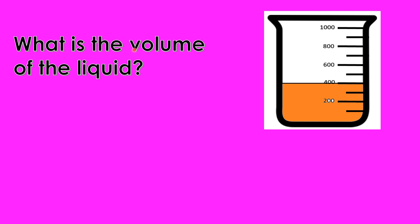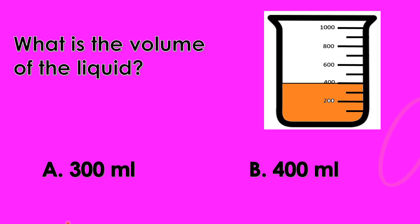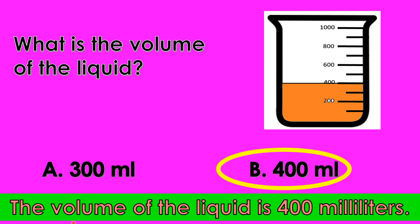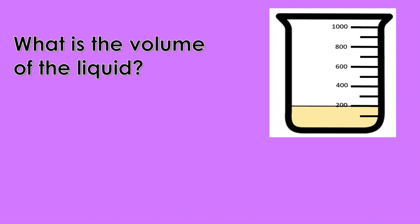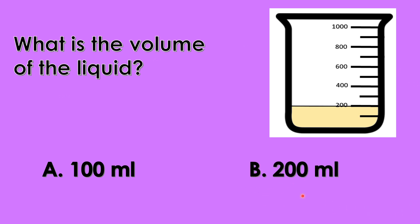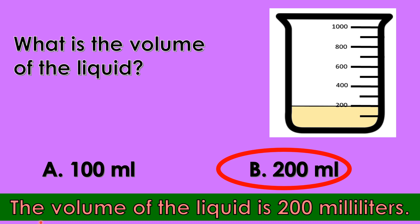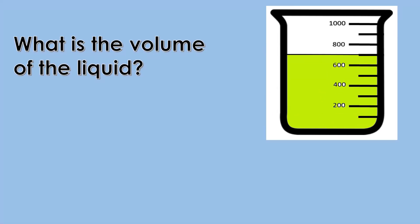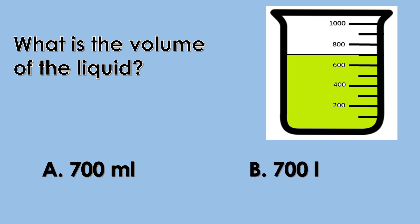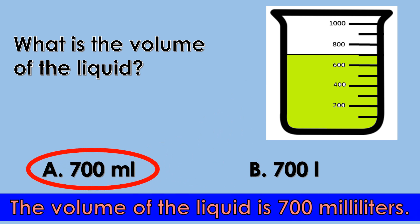Let's practice! What is the volume of the liquid? A. 300 milliliters. B. 400 milliliters. Good job! The volume of the liquid is 400 milliliters. What is the volume of the liquid? A. 100 milliliters. B. 200 milliliters. Very good! The volume of the liquid is 200 milliliters. What is the volume of liquid? A. 700 milliliters. B. 700 liters. You are correct! The volume of the liquid is 700 milliliters.